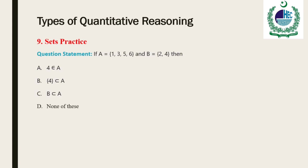In mathematics, a set is a collection of elements. The elements that make up a set can be any kind of mathematical object: numbers, symbols, points in space, lines, other geometrical shapes, variables, or even other sets. The set with no element is the empty set; a set with a single element is a singleton. They may ask you different types of tricky questions related to sets and their types.